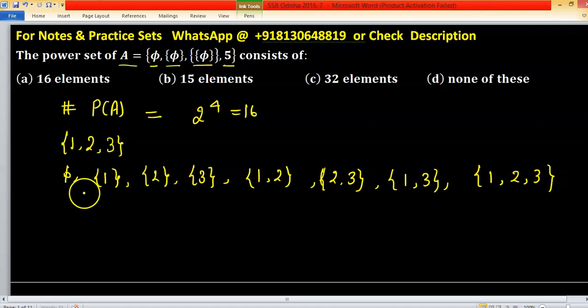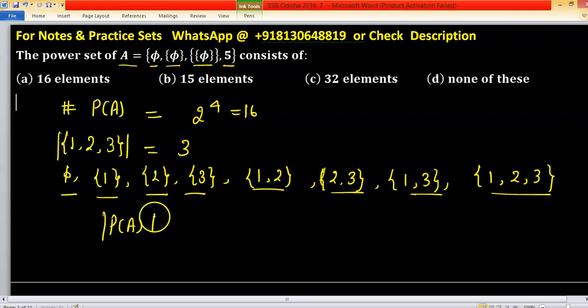You can count 1, 2, 3, 4, 5, 6, 7, 8. So cardinality of this set is 3, so cardinality of power set A will equal to 2 raised to the power 3.